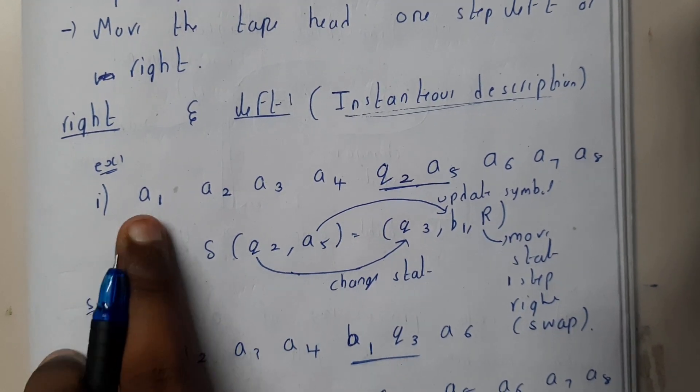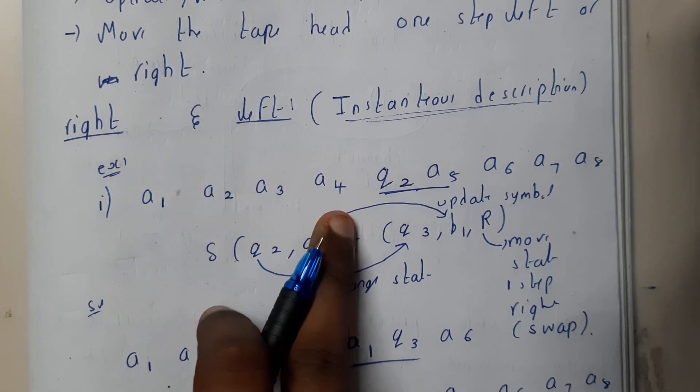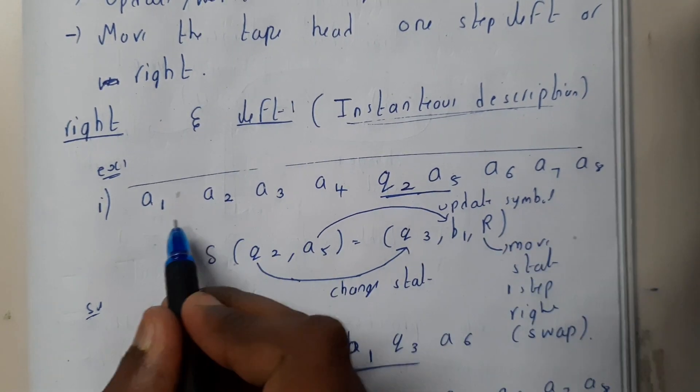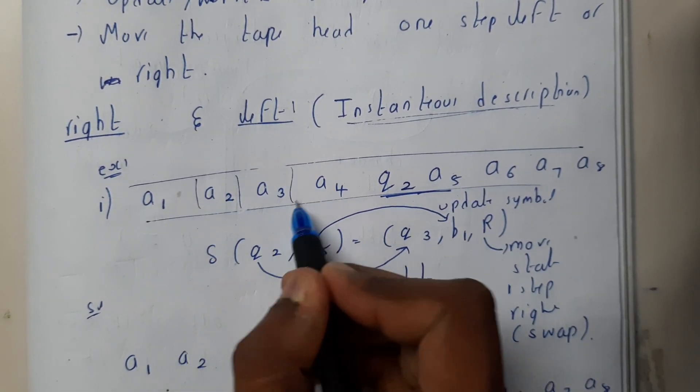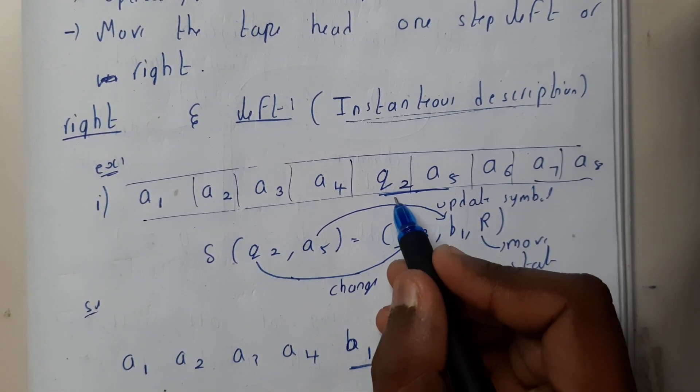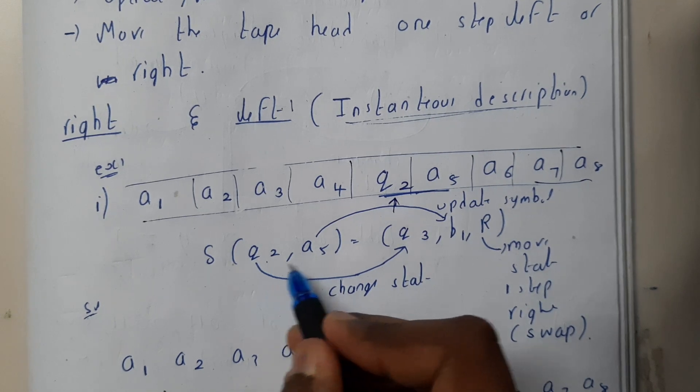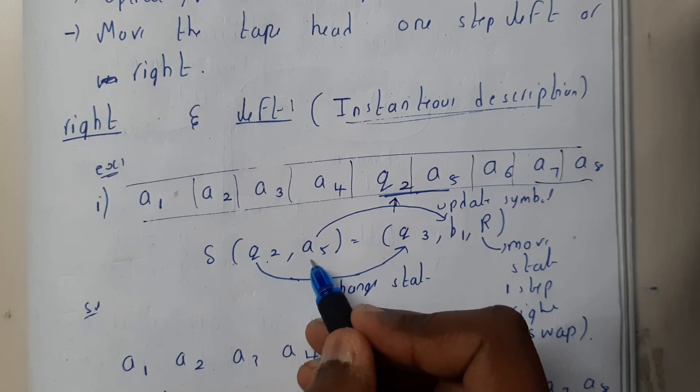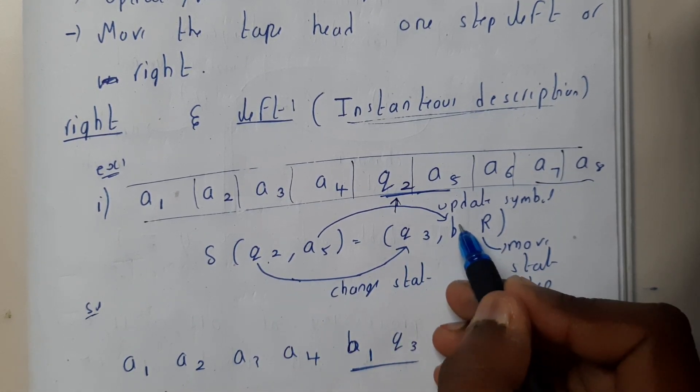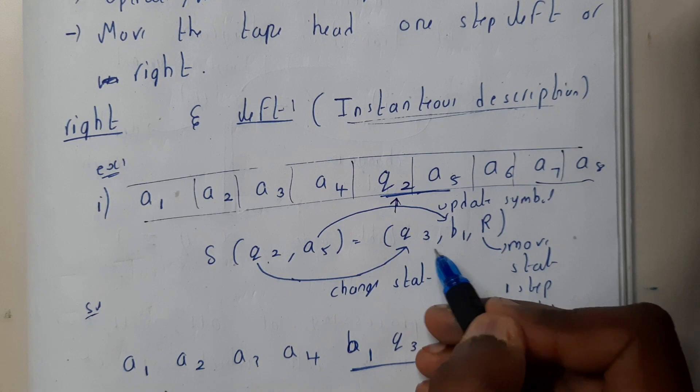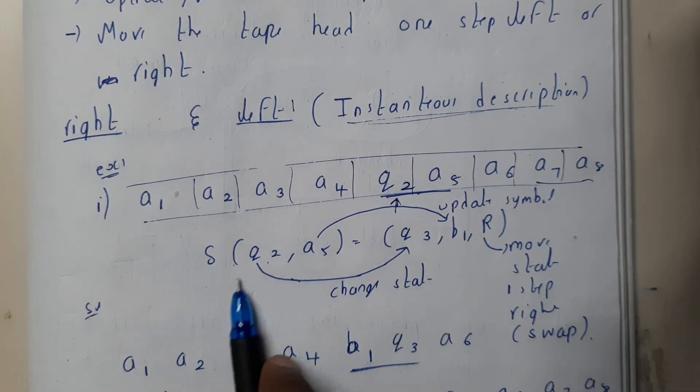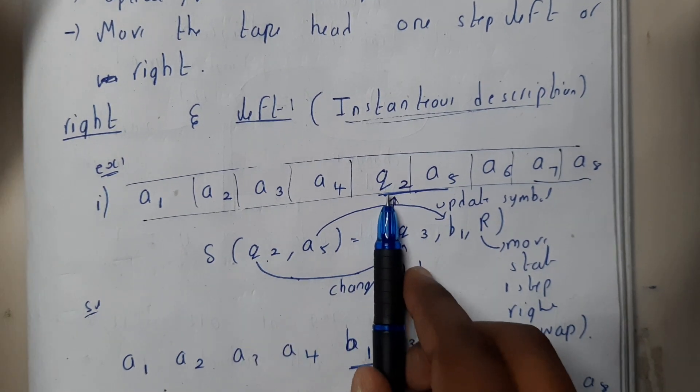Let us assume a2, a3, a4, q5, q, a5, a6, a7, a8. This is our tape. Our head is at q2, and on input a5 it is saying that change the state q2 to q3 and change the input symbol a5 to b1 and move one step right. Initially we changed the state and changed the symbol to b1.